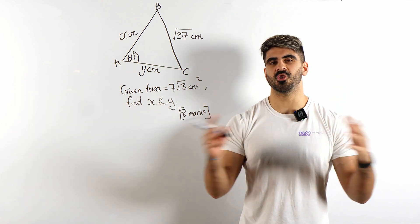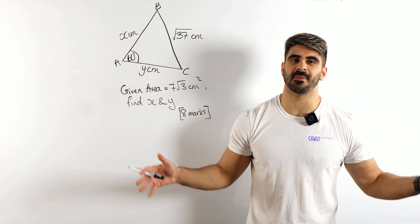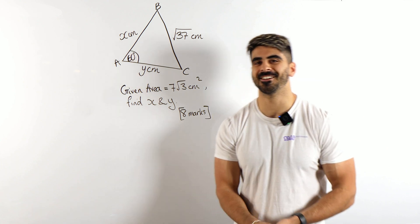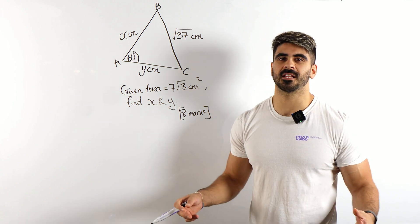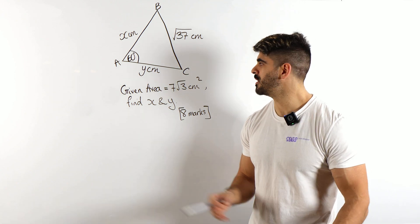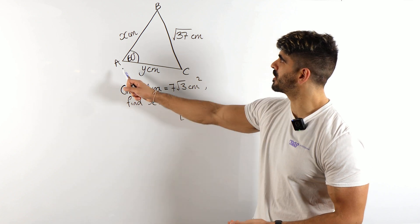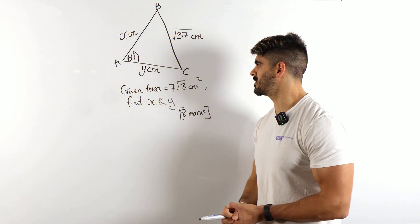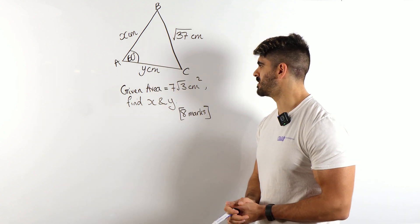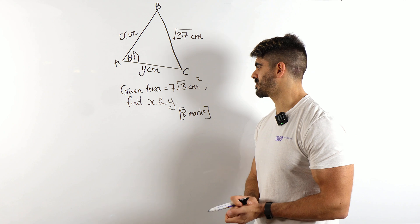This is one of the hardest non-calc GCSE further mathematics questions you're going to get asked. Triangles. Most likely, sine rule, cosine rule, they're also talking about the area. So we've got this triangle ABC, here are the lengths, we've got an angle of 60 degrees. Given that the area is 7 root 3 centimeters squared, find the value of x and y.